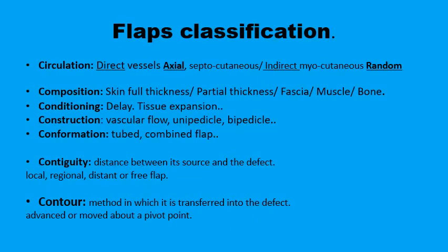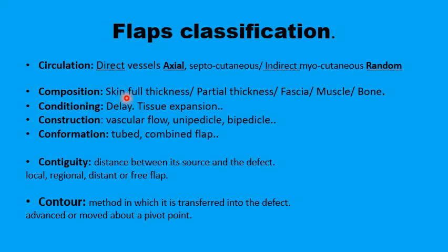There are various ways to describe a flap and several proposed classifications. Conveniently, they can all be combined into a system with sub-items starting with a C. The first C is the circulation — it can be a direct vessel going to the flap like in axial flaps, or indirectly through musculocutaneous branches like in random flaps — followed by the composition, which refers to whether you are using a full thickness skin flap or partial thickness including fascia.